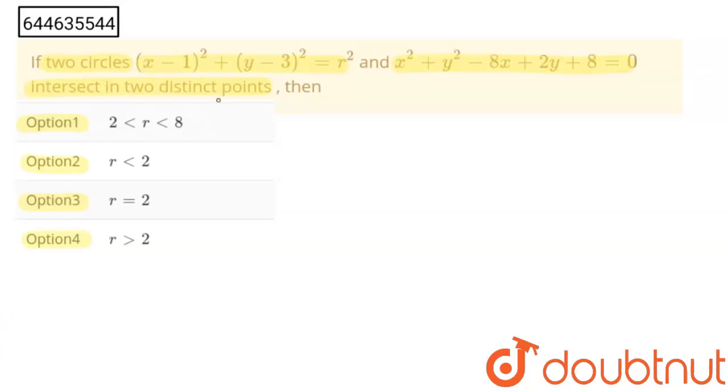So if two circles intersect at two distinct points, then the condition is distance between C1C2 is less than mod of r1 plus r2.